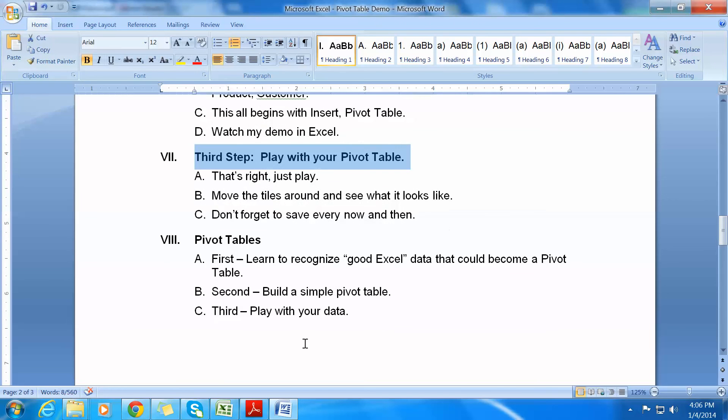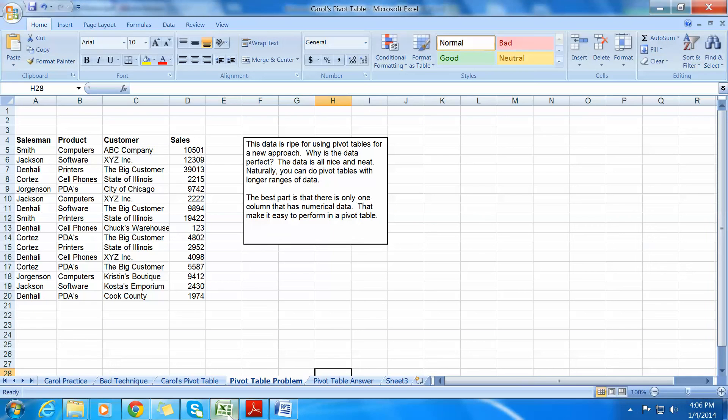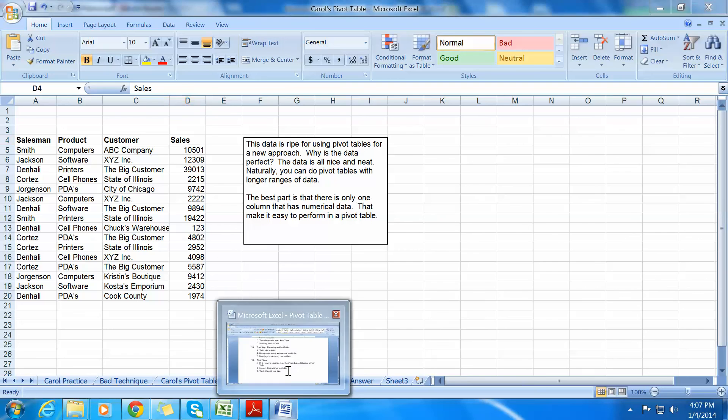So this is kind of a summary for pivot tables. I think the really important part is you first learn to recognize good Excel data that could become a pivot table. And that was over here. Once again, data that is contiguous, there's no breaks in the data, data that has lots of descriptors, and that would be salesman, product, customer. And when you build pivot tables, begin with something that just has one column that has numbers. Typically, people do this for sales figures.